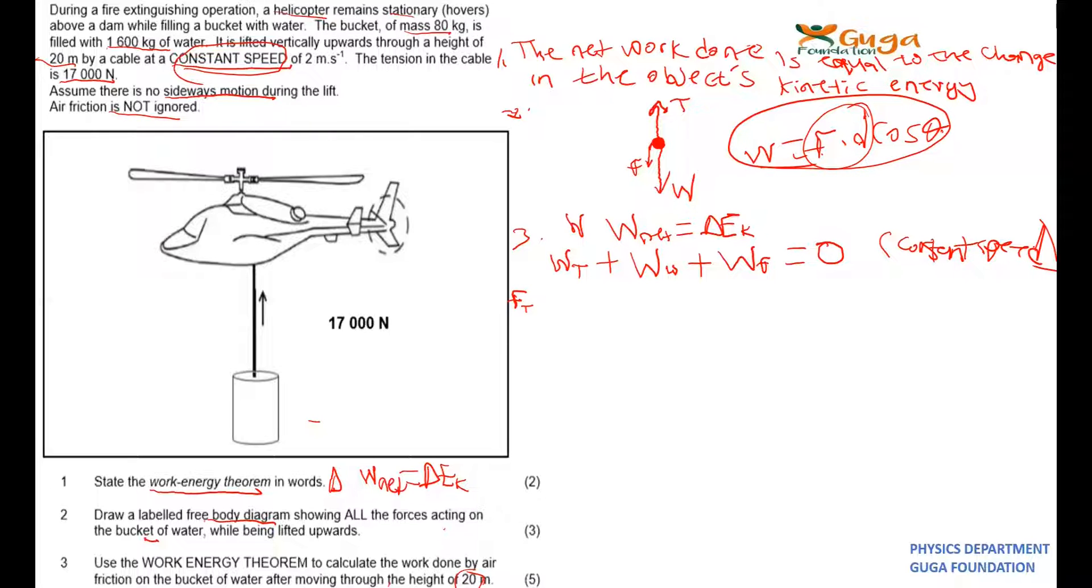You can have F times Y times cosine theta. For weight, you have got FG, FG times Y times cosine theta, plus work done by friction.